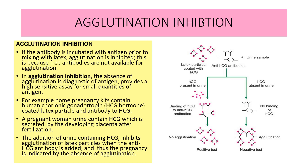In this diagram, the latex beads are coated with HCG, and in the kit we have the anti-HCG antibody. When we add the urine sample, in the first case on the left-hand side, the HCG present in the urine blocks the antibodies — no free antibodies are available for binding with the latex beads containing antigen. As a result, no agglutination occurs and the test is positive. In the second case on the right-hand side, HCG is absent in the urine, so antibodies are free to bind with the antigen on the latex particle and agglutination takes place — the test is negative. This is agglutination inhibition.